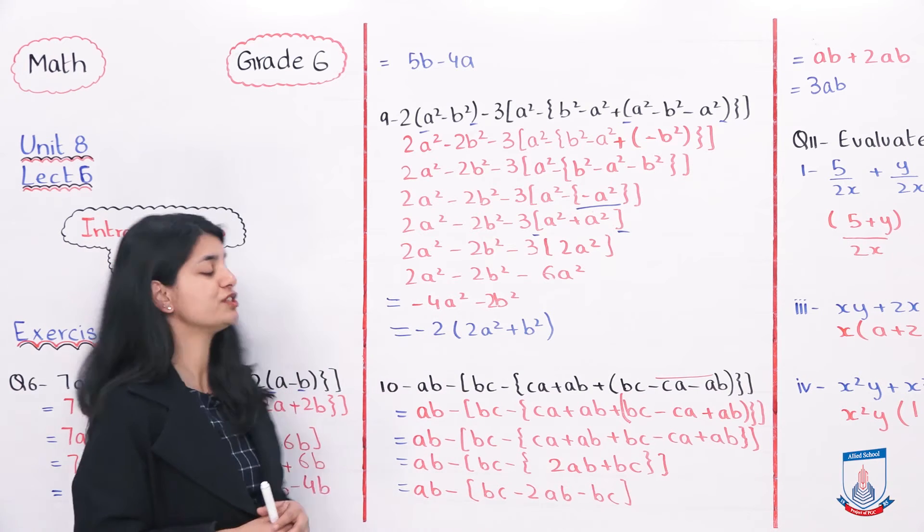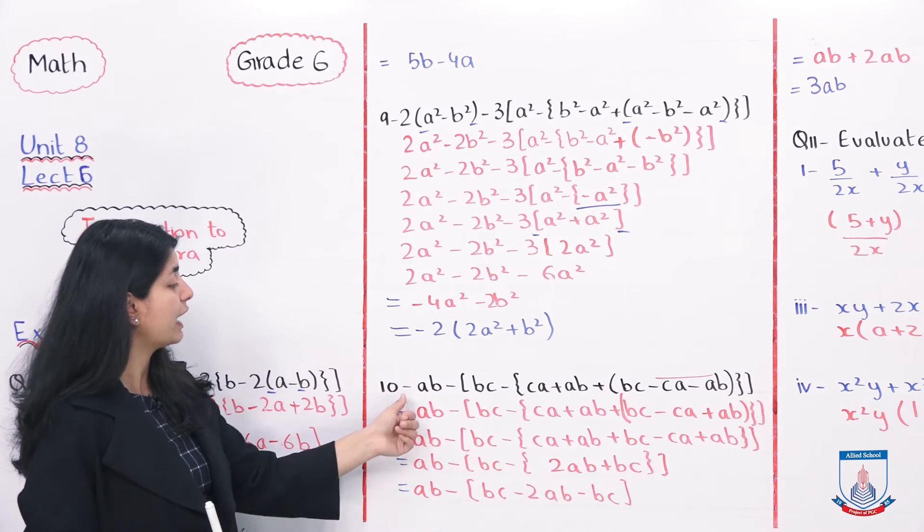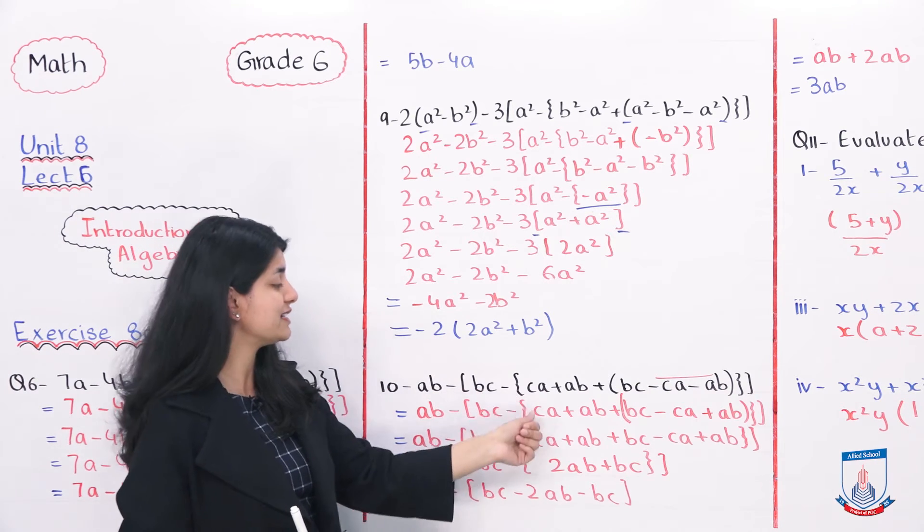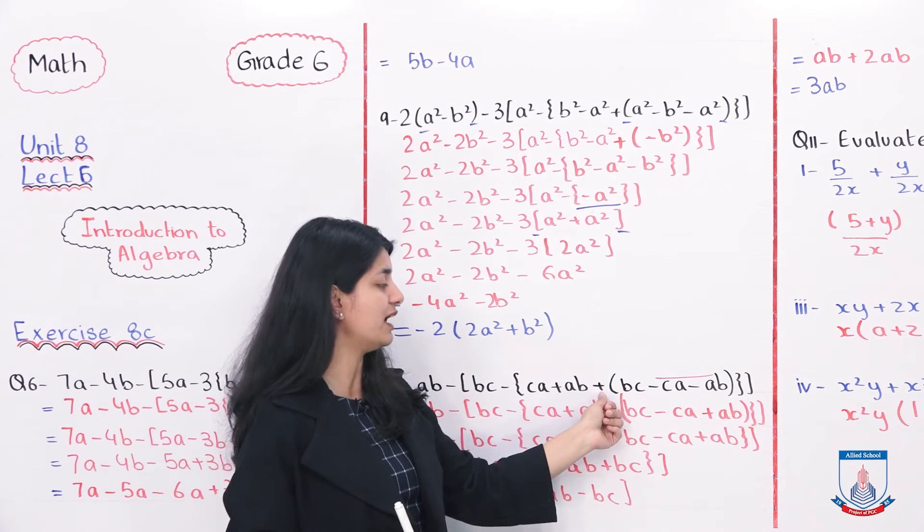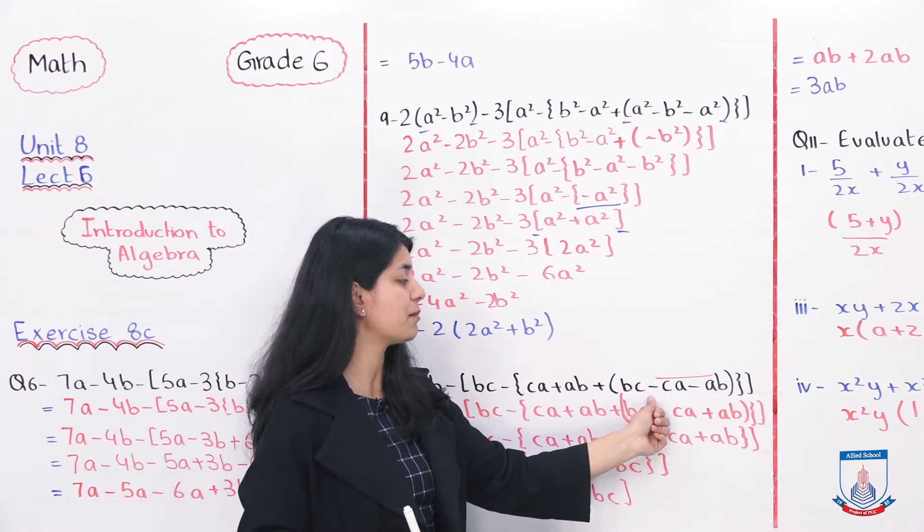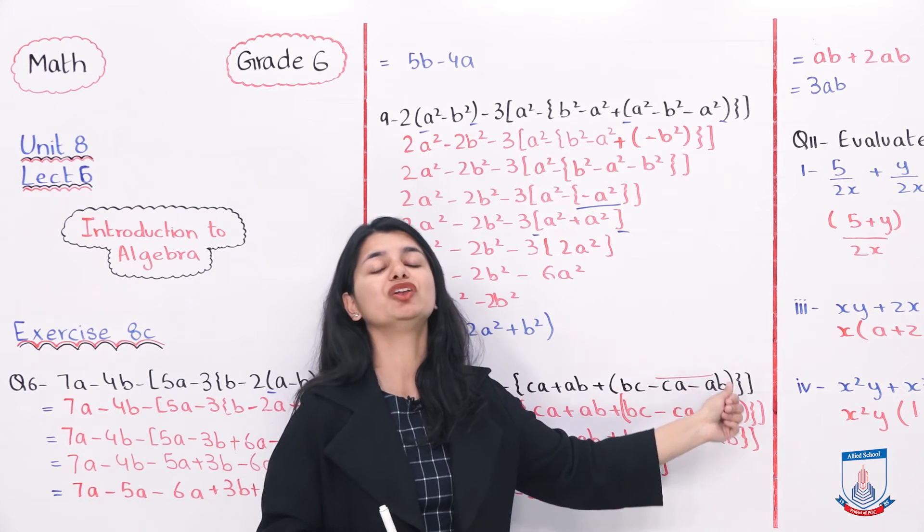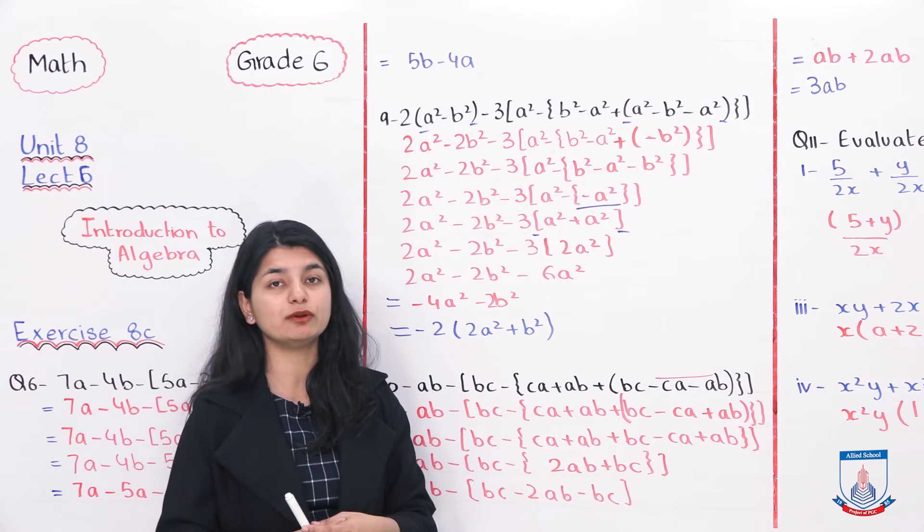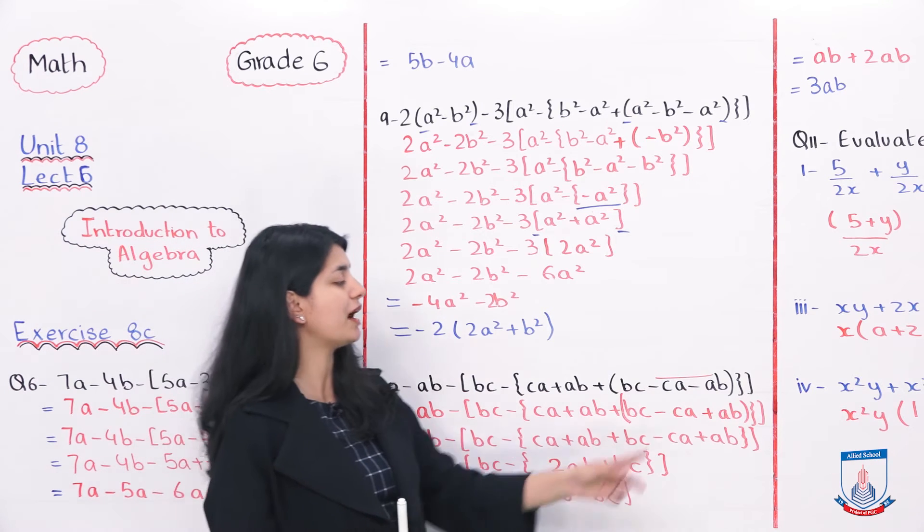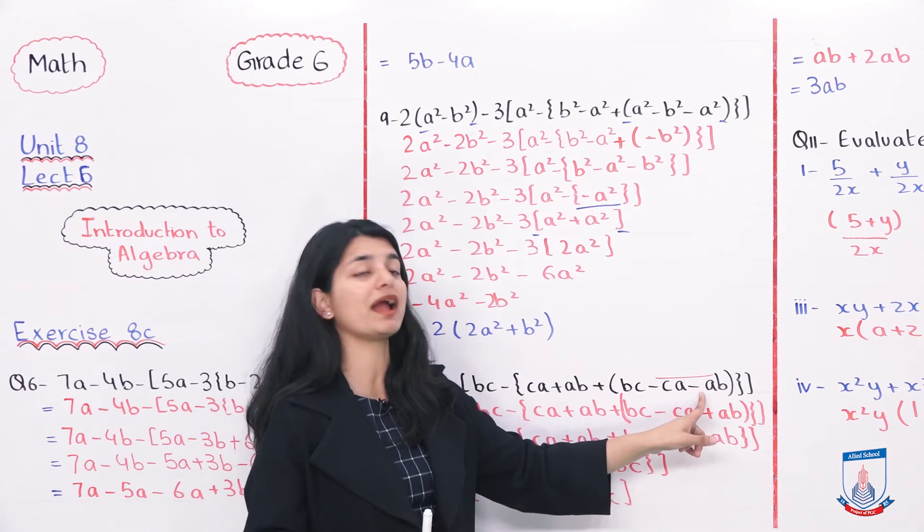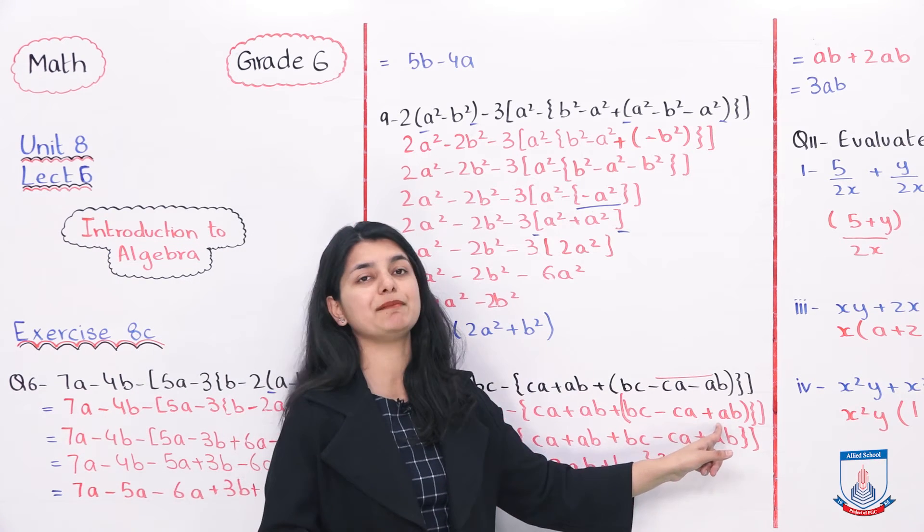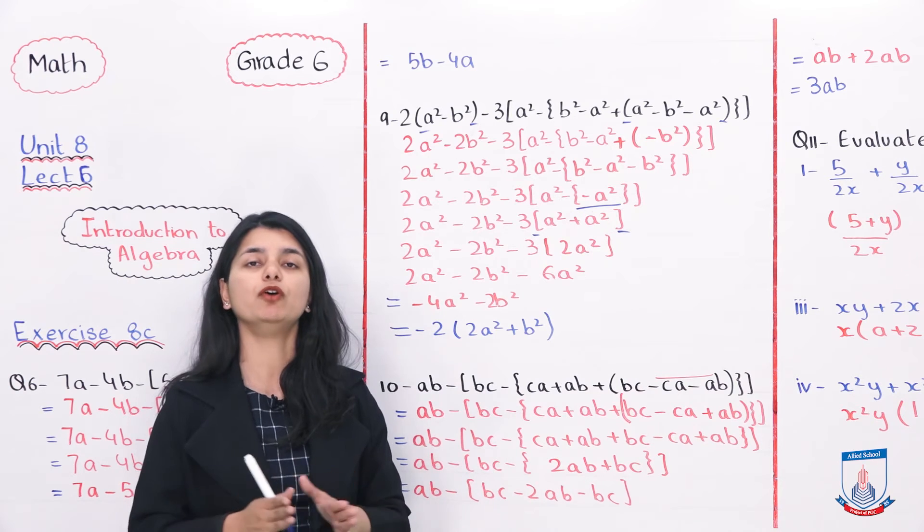Ab aapka jo second last question hai, that is question number 10. AB minus bracket BC minus, braces CA plus AB plus parenthesis BC minus vinculum CA minus AB closing all the brackets. Vinculum humne first degree hoti hai to solve. Sab sabse pehle hum dekhayenge humara vinculum ko. CA minus AB signs convert ho jayenge, CA plus AB ban jayega, vinculum jo hai, humara open ho gaya.